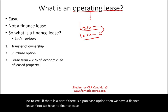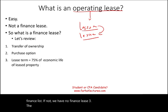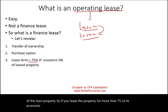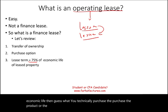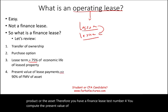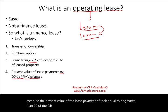Test three: lease term. The lease term should equal 75% or more of the economic life of the leased property. If you lease the property for more than 75% of its economic life, you technically purchased the asset — finance lease. Test four: compute the present value of the lease payments. If they equal or exceed 90% of the fair value of the asset, you have a finance lease.